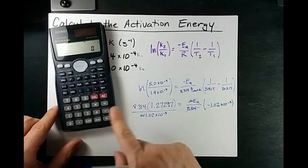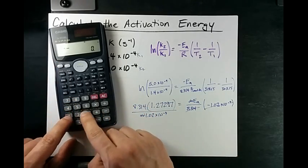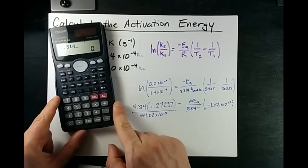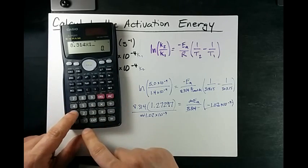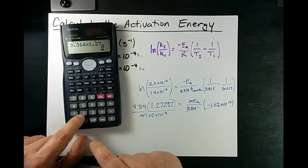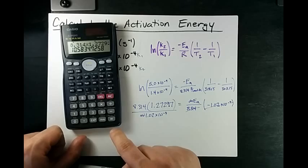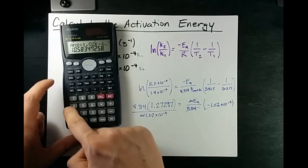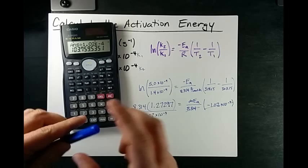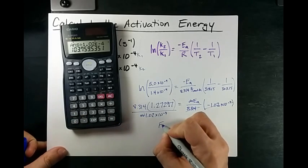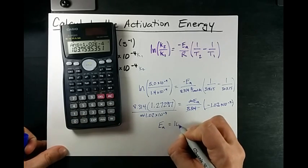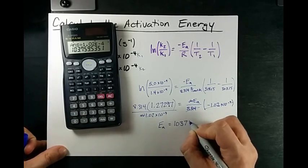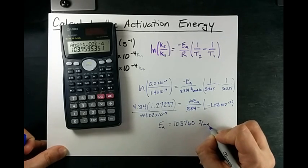Let's just do it all at once so you can watch me do it. 8.314 times 1.27297 divided by 1.02 times 10 to the negative 4.